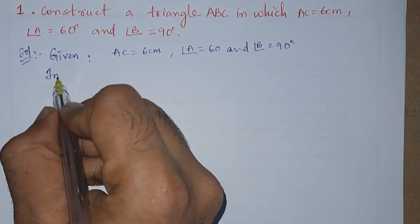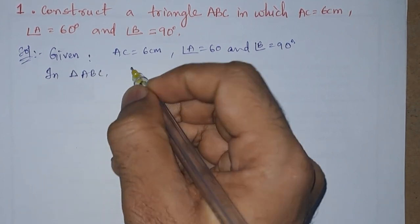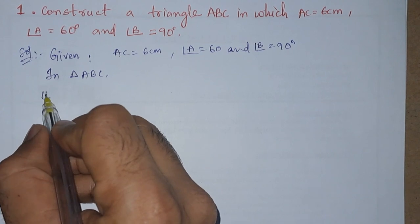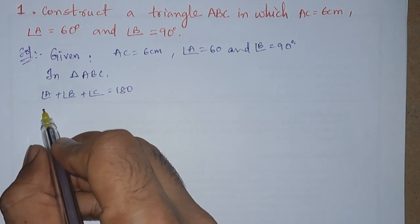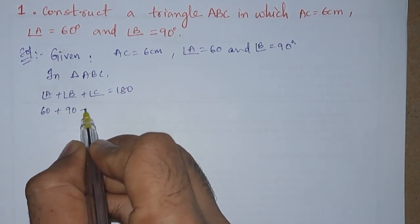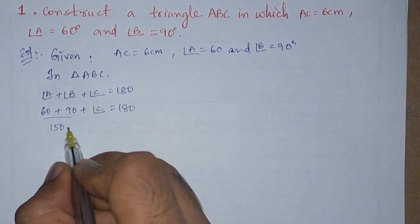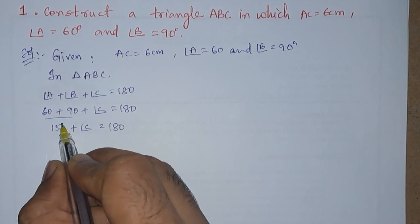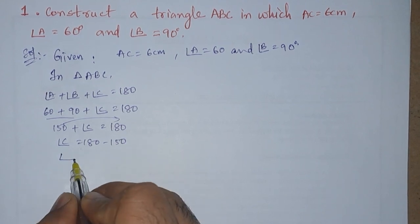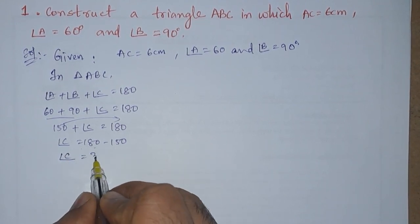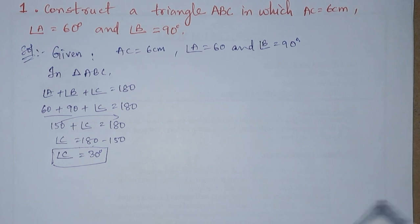We know that the sum of all angles in triangle ABC: angle A plus angle B plus angle C equals 180 degrees. Angle A is 60 degrees, angle B is 90 degrees, so 60 plus 90 is 150, plus angle C equals 180. Therefore angle C equals 180 minus 150, which gives us angle C equals 30 degrees.